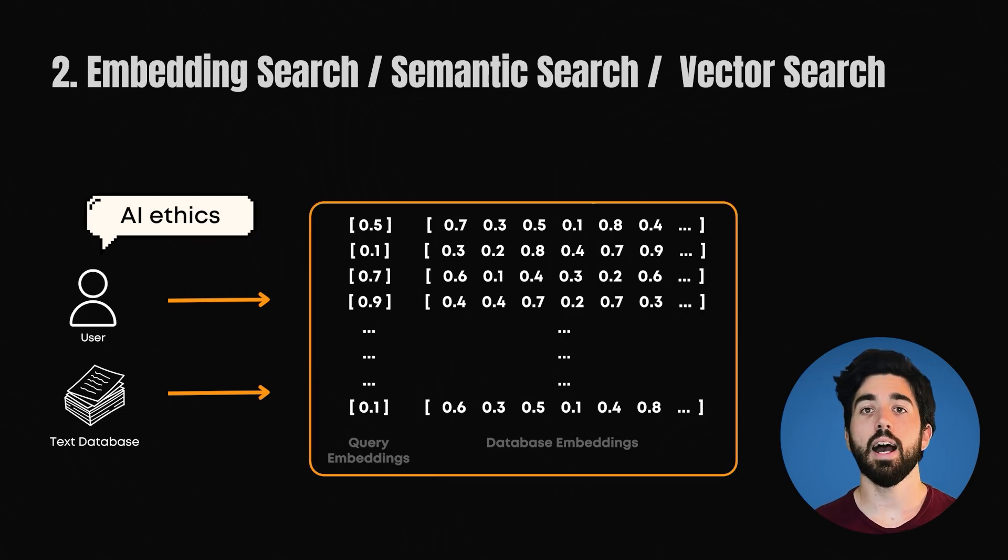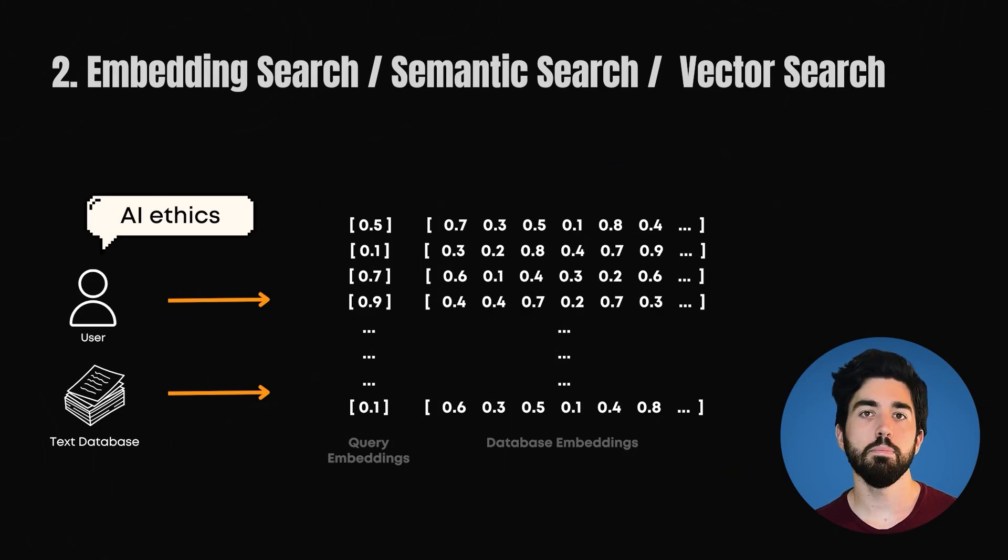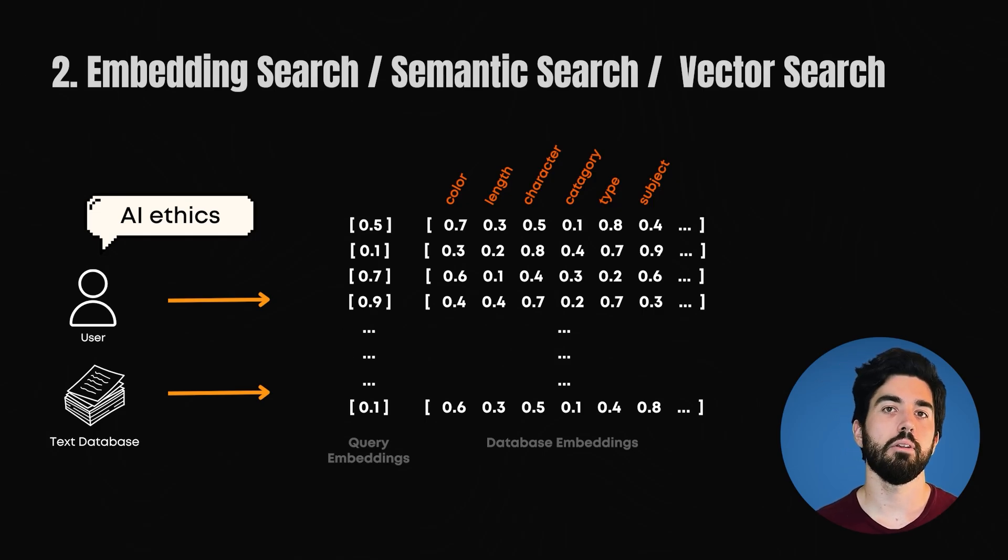These embeddings do more than just representing the words we have. Thanks to the model's training, they have learned to capture the semantic meaning of the text. They can simply be seen as huge lists of characteristics with a value for each of them, which tells it, for example, if it's an object, what is its color, its shape, etc. It can then use these new representations of words to compare them mathematically.